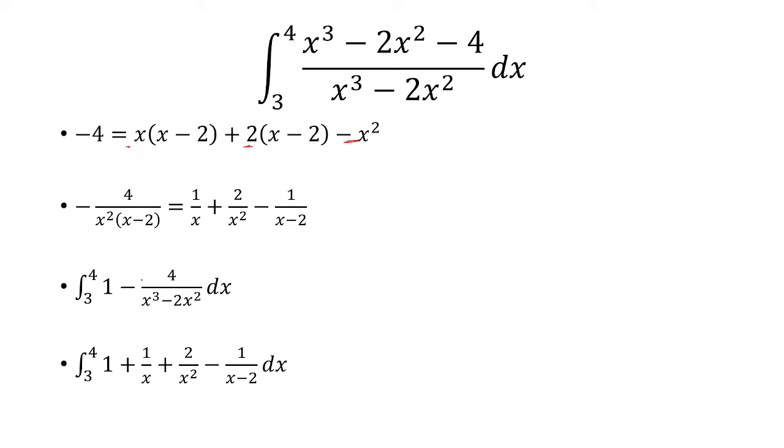And here you don't want to fall for the trap of putting a minus in front of the 1 over x, since this entire thing is 1 over x plus 2 over x squared minus 1 over x minus 2.